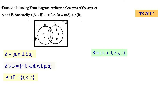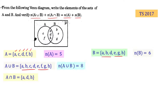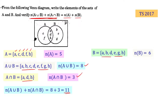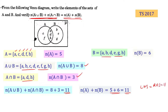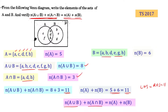Now let's count the number of elements in each set. n(A) equals 5, n(B) equals 6, n(A∪B) equals 8, and n(A∩B) equals 3. Taking LHS: n(A∪B) plus n(A∩B) equals 8 plus 3 equals 11. Taking RHS: n(A) plus n(B) equals 5 plus 6 equals 11. Therefore LHS equals RHS equals 11, and the relation is verified.